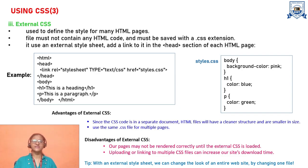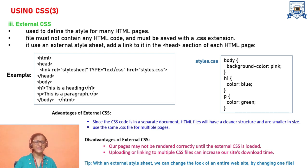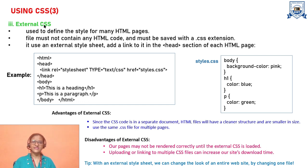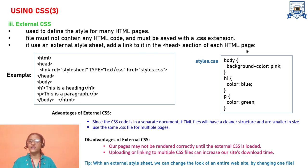In case of external CSS, we separate the HTML file and the style file, keeping all the layout, design, and look and feel in a separate file with the extension .css. External CSS is used to define the style for many HTML pages. It uses an external style sheet, and we add a link to it in the head section of each HTML page. With this link, we can merge all the features defined in style.css into our HTML pages — any number of HTML pages can be beautified with this single style.css.